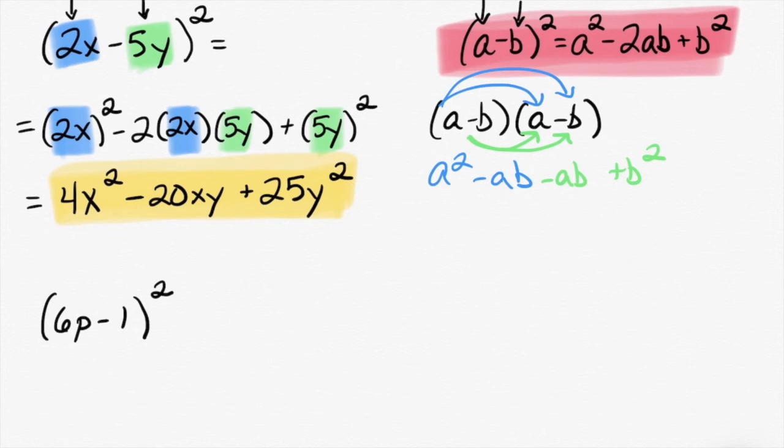In this problem, a is the 6p and b is just the 1. Not the negative one, just the 1. And now I'm going to follow that formula up there that I highlighted in red. I start off with a squared. My a was 6p. My b was 1. So, a squared is 36p squared. Next in the formula, minus 2ab. So, minus 2 times a times b, which was 1. Which I like, because multiplying by 1 is pretty easy. The last thing in my formula is plus b squared.